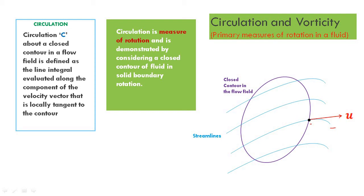We can resolve the velocity u in different directions. Resolving u along the tangent to the contour gives us u cos alpha, where alpha is the angle between the contour tangent and the direction of the velocity vector. So u cos alpha is the resolved component of the velocity of the fluid particle along the contour tangent. For a large number of particles on the contour, each has such a component velocity u cos alpha depending on the angle made with the contour tangent.